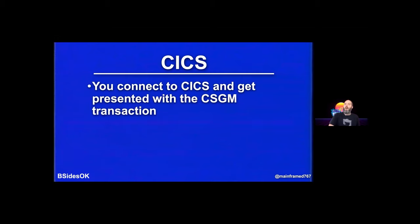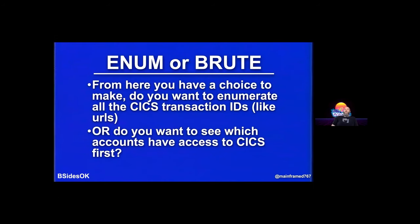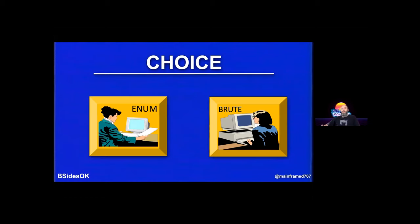You connect to CICS and get presented with CSGM — the 'good morning transaction.' It's called CSGM; it doesn't do anything, it just sits there. Now we have a choice: do we want to enumerate the transaction IDs to see if any are accessible without authentication, or try the Windows domain accounts to see if they work in CICS? Votes come in: three for enum, one for brute — we're doing enum.